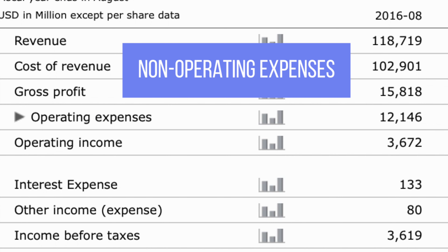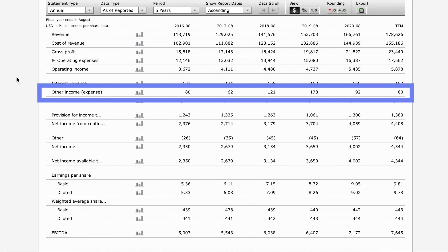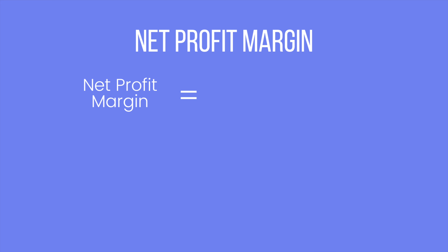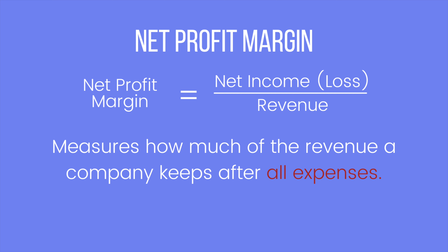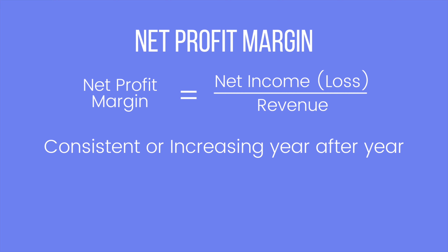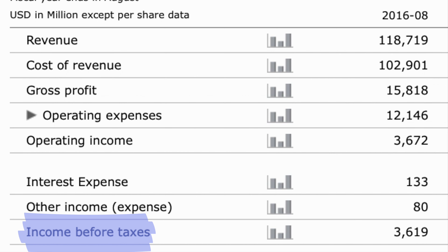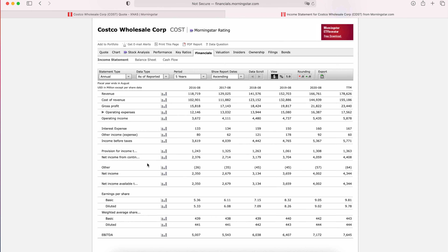After that, you want to take non-operating costs into consideration, like interest expense and other income or expenses. Ideally, you want interest expense to be low. Other income or expense isn't as important because these are one-time occurrences not related to the core operation of the business — things like lawsuits or asset acquisitions. You evaluate net income with net profit margin, which is net income divided by revenue. This measures how much revenue a company keeps after all expenses, and you want to see this consistent or increasing year after year. When you subtract non-operating expenses from operating income you get income before tax, then take away income tax to get net income from operations. You want to see net income increase year after year.